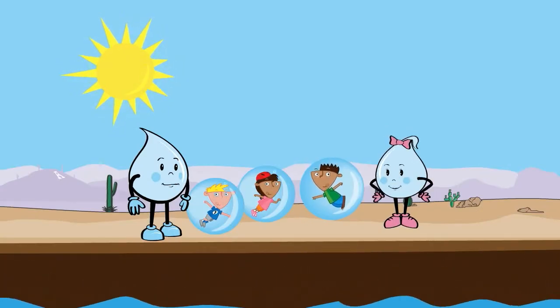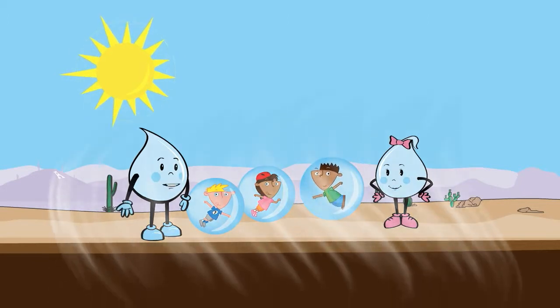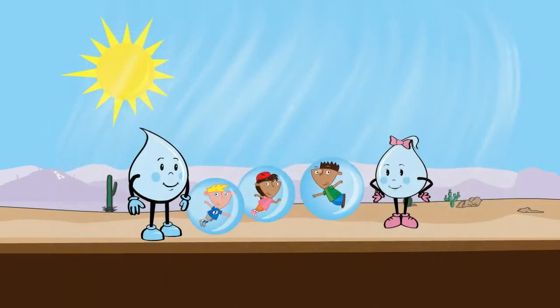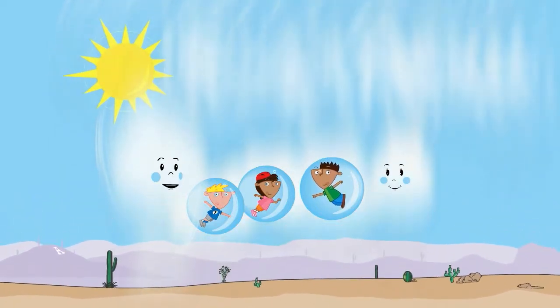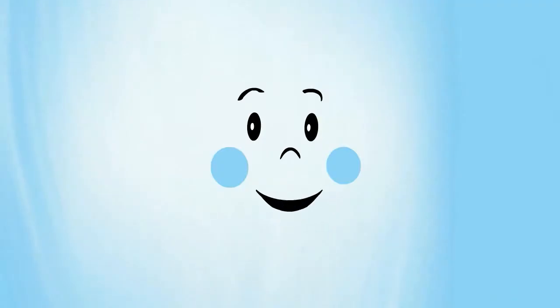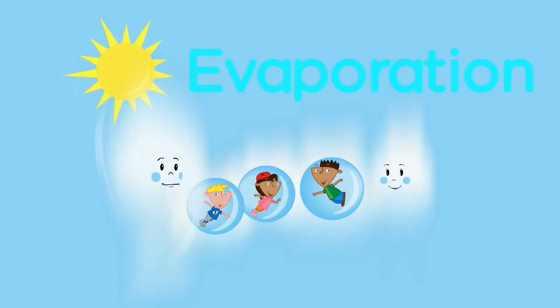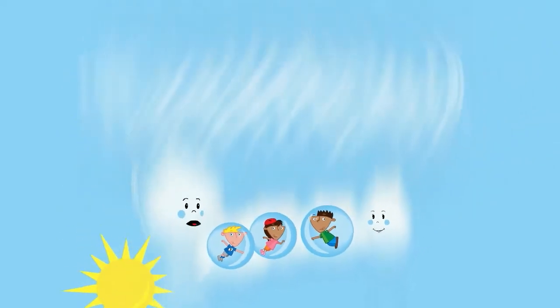Much of the water rushes down the washes and rivers that are all around Tucson. Some of the water that falls during a storm returns up to the sky — when water from the earth heats up and returns into the sky, we call that process evaporation. Water evaporates and rises into the sky in the form of a gas we can't see.